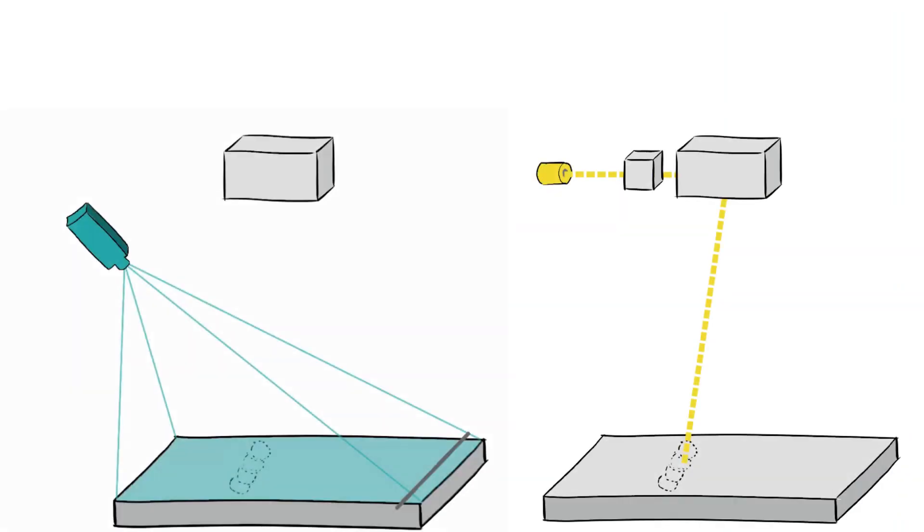There are different monitoring systems that can be assembled on the optic path on-axis or can be independent off-axis. These monitoring systems collect and analyze the light emission of the laser material interaction and provide basis for process development and quality controlling.